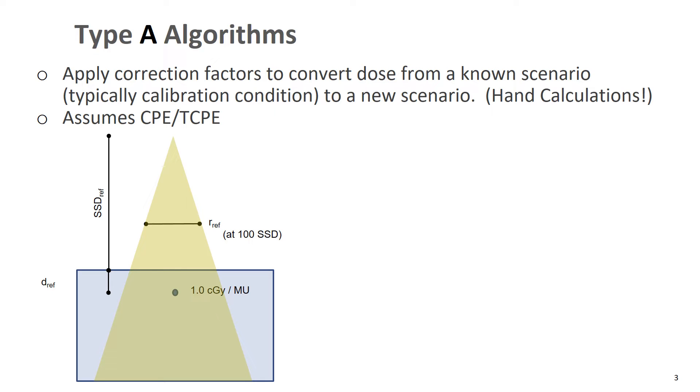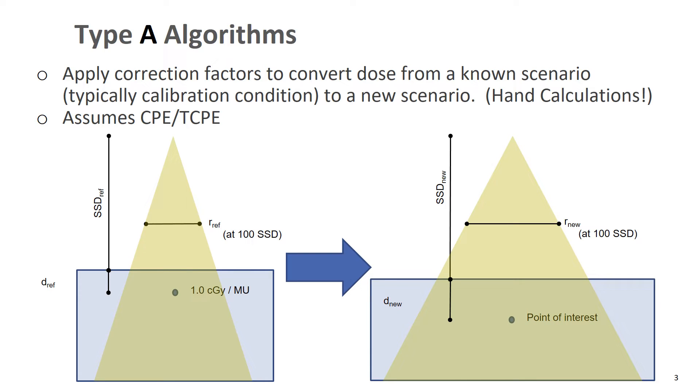And at that particular location, we know that we have one centigray per monitor unit. We know what the dose is because we calibrate the machine to give that. It's measured. And then we want to calculate dose to a new condition. Maybe it has a new source to surface distance, maybe it has a new depth, maybe it has a new field size, and so forth.